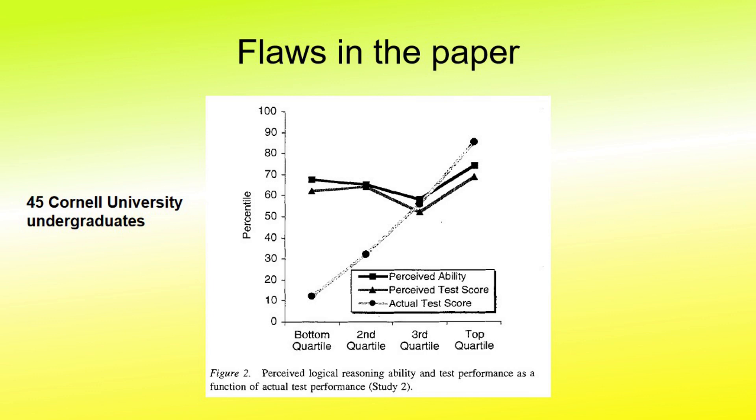Well, this one is a little better than the first one in that it is actually a test on logical reasoning. It suffers horribly in terms of the size of the sample, which consists of only 45 Cornell University undergraduates. This can hardly be considered a representative sample of humanity.